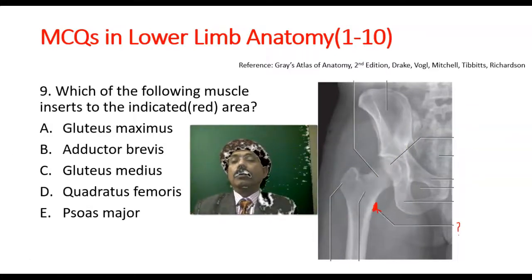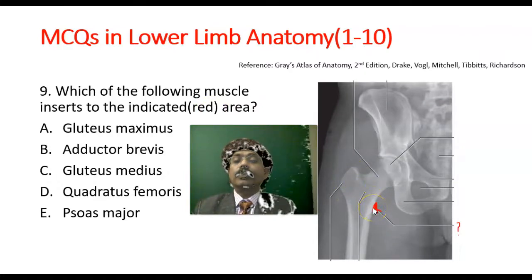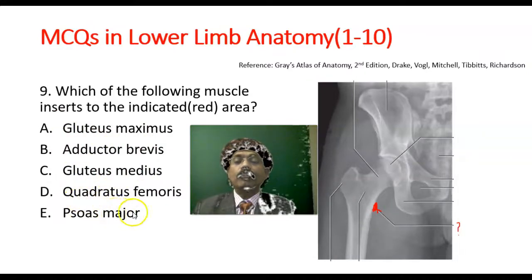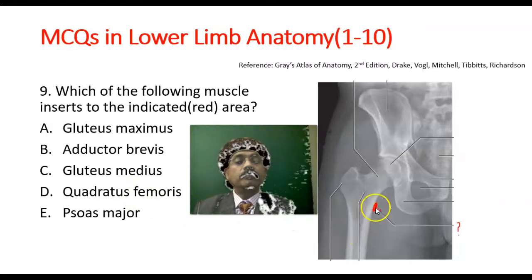Question number 9: Which of the following muscles inserts to the indicated red area? This is the lesser trochanter. Options are: gluteus maximus, adductor brevis, gluteus medius, quadriceps femoris, psoas major. The answer should be psoas major, to the lesser trochanter of the femur. It is also called iliopsoas because iliopsoas inserts together in almost the same place.